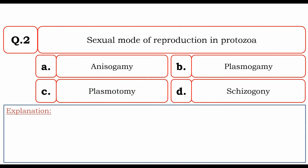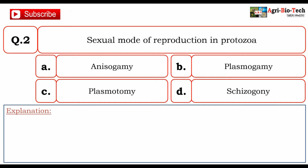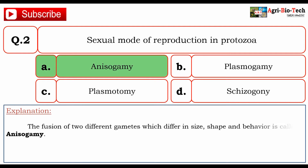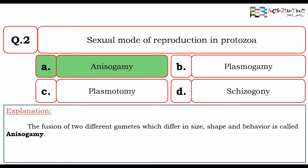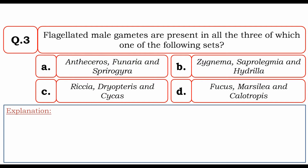A total of five nuclei take part in double fertilization, but since the two polar nuclei fuse to form one, the correct answer for this question is four. Next question: sexual mode of reproduction in protozoa. The options are anisogamy, plasmodamy, and schizogony. The correct answer is A: anisogamy. The fusion of two different gametes which differ in size, shape, and behavior is called anisogamy.